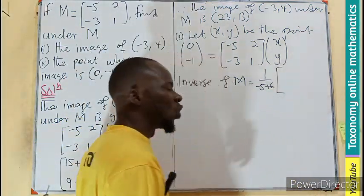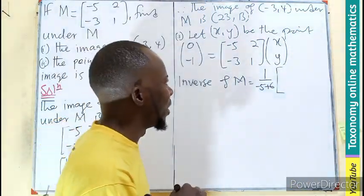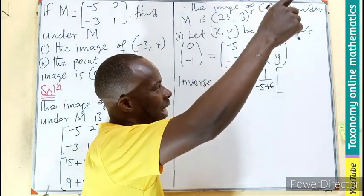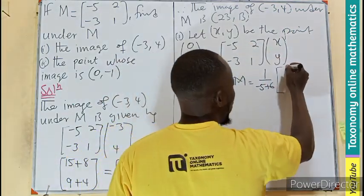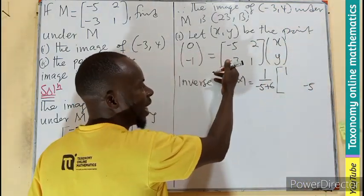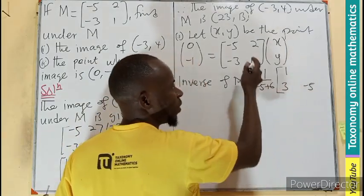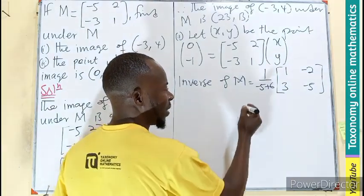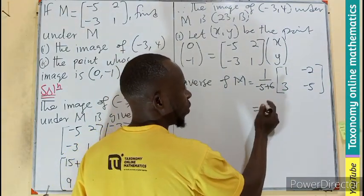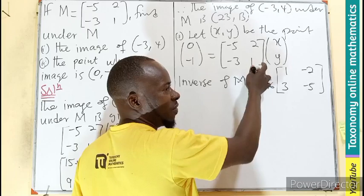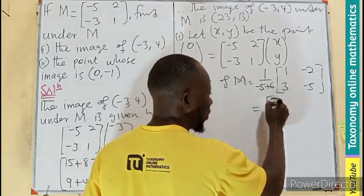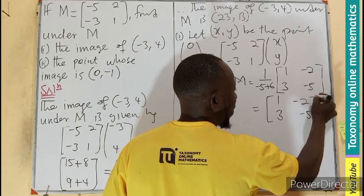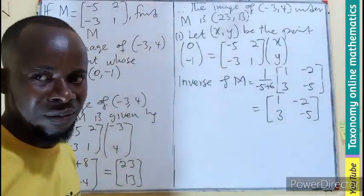Then we are going to have 1 over the determinant, 1 over (-5 + 6), as 1 over the determinant. Then we multiply that by the adjoint of the matrix. What do we mean the adjoint? We swap the position of the leading diagonal, then we negate the other diagonal. So this becomes 1, -5. We negate this, it becomes positive. If we negate this, it becomes -2. So in this case, the inverse will be 1 divided by 1, it will still be 1. So we still have 1, 3, -2, -5 as the inverse.